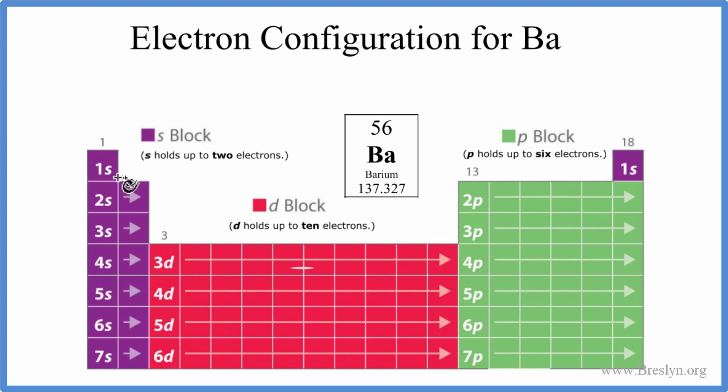So we start with 1s, and s orbitals can hold up to two electrons. We have 1s1, 1s2, so we put 2 there, and then we go to 2s, 2s1, 2s2. We've used 4 electrons, we have 56.